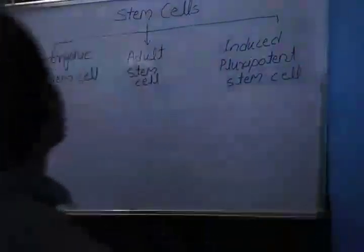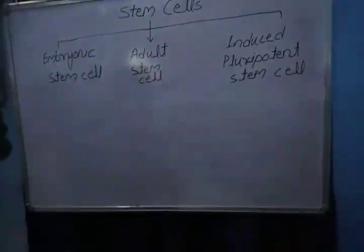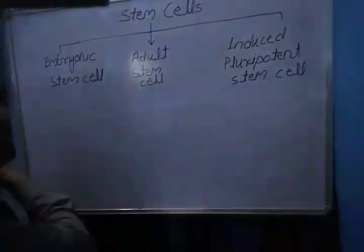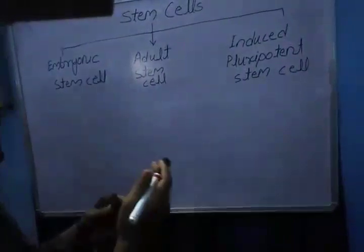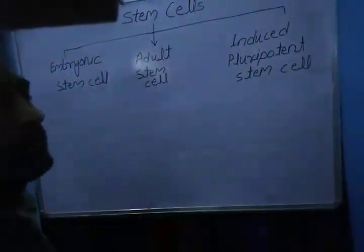Come to the first, embryonic stem cells. Embryonic stem cells divide and provide new cells to the embryo that grows and develops into a baby.